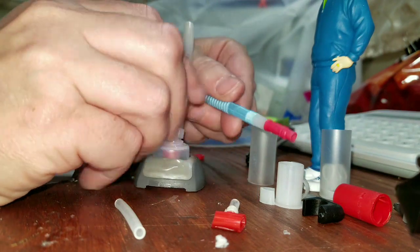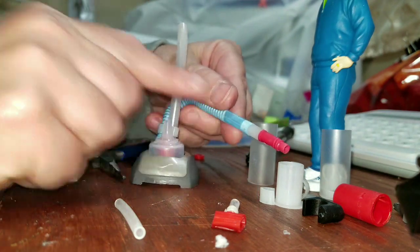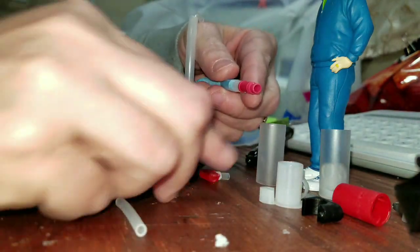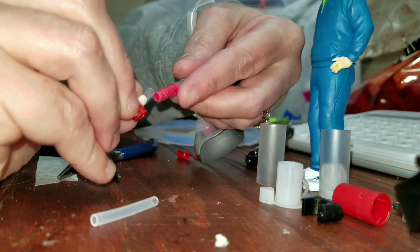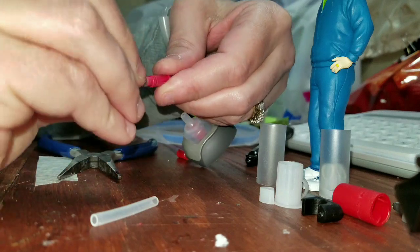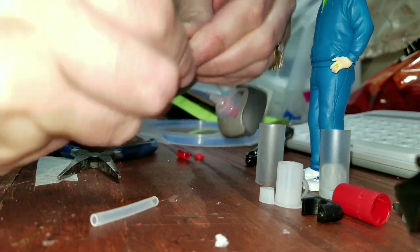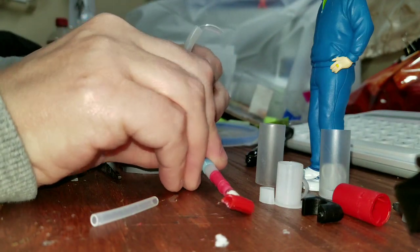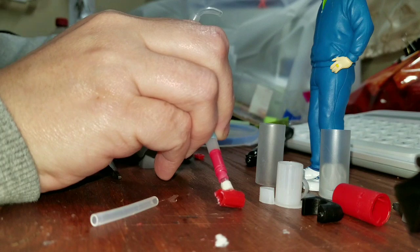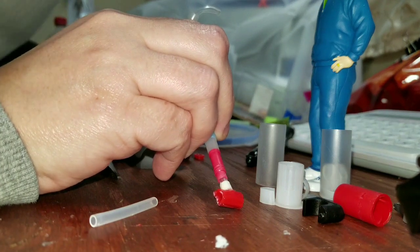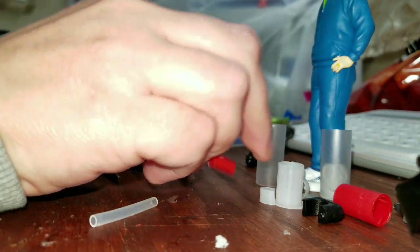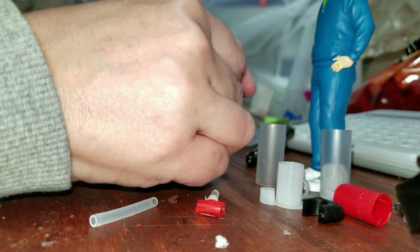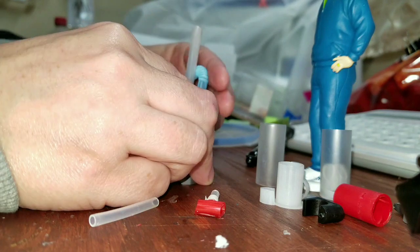And the great thing about that is this little end that goes to the squirt bottle will allow it to sit right in there. So then you have a nice little vacuum cleaner attachment.